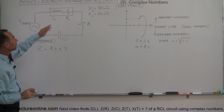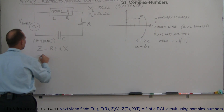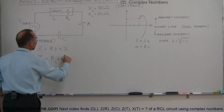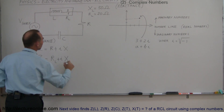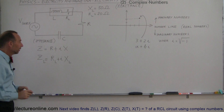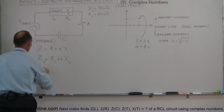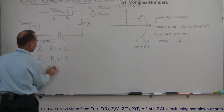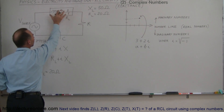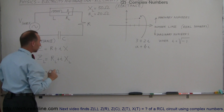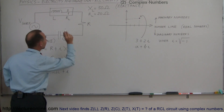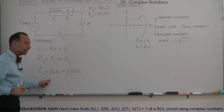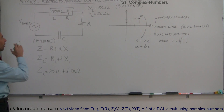In the case of this particular inductor, we can say that the impedance of the inductor equals the resistance of the inductor plus i times the reactance of the inductor, which we call X sub L. So Z sub L equals 20 ohms — that's the real part, coming from the resistive property of the inductor — plus i times 50 ohms. And that is the impedance of that inductor.